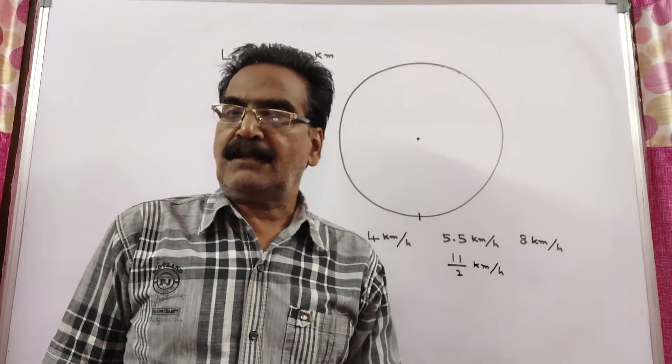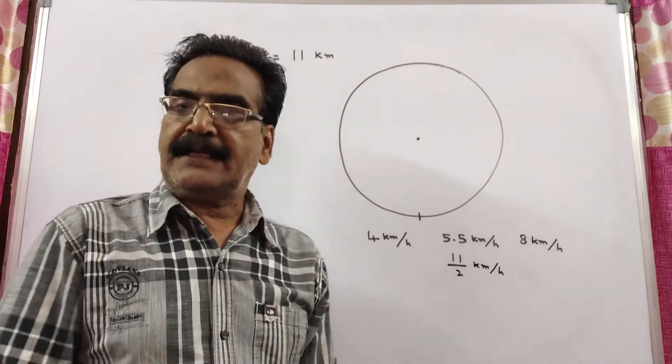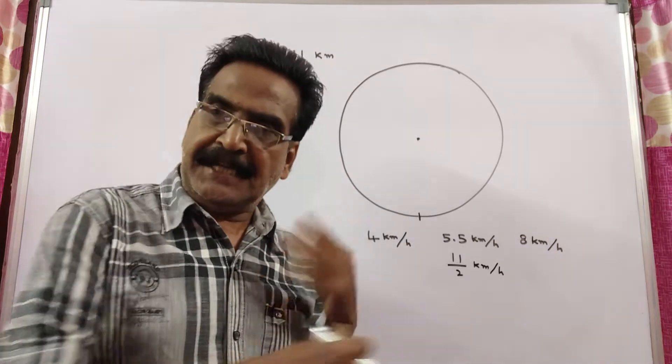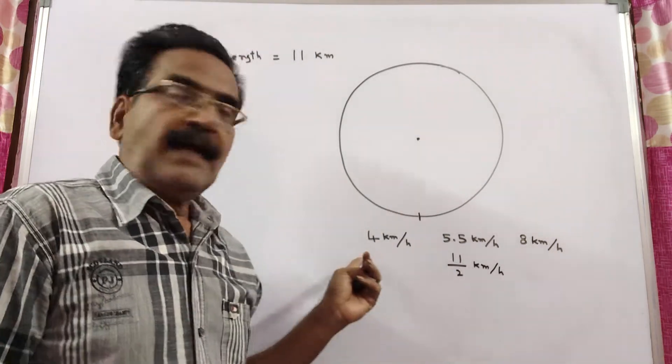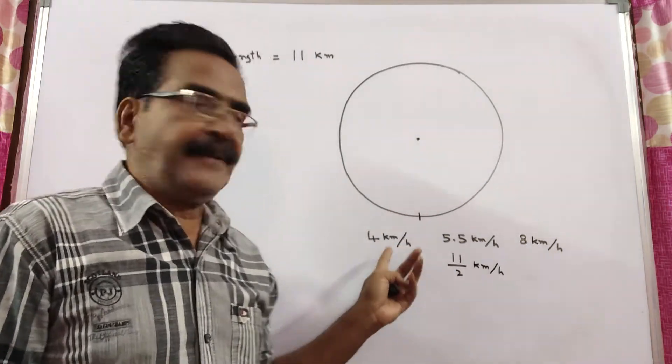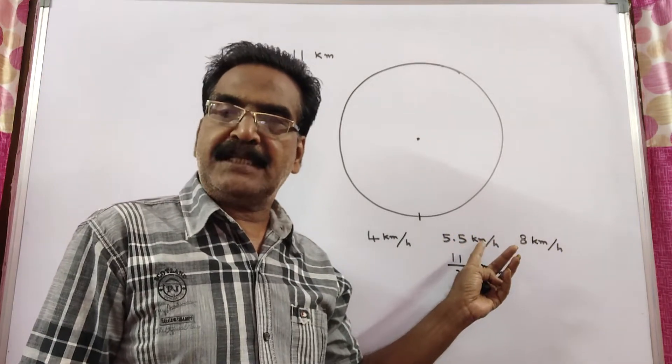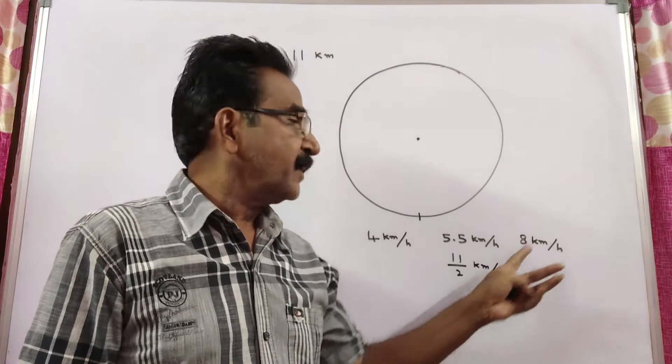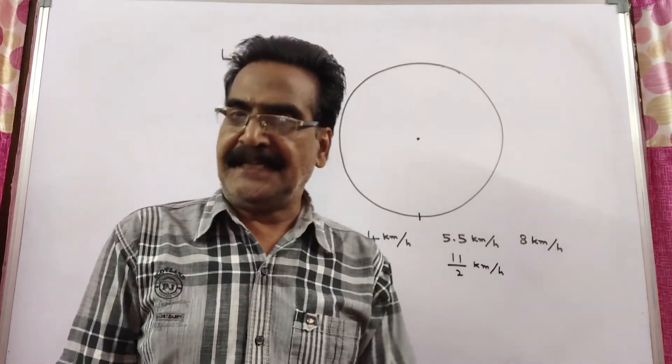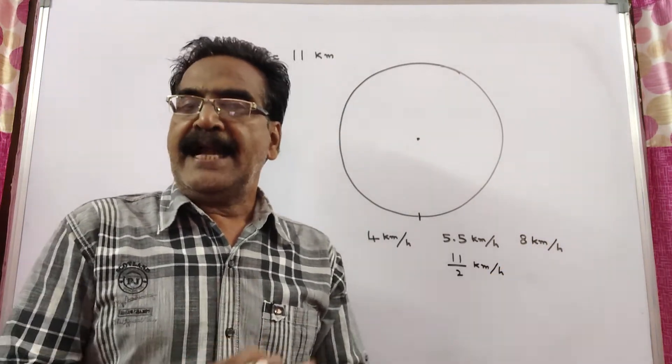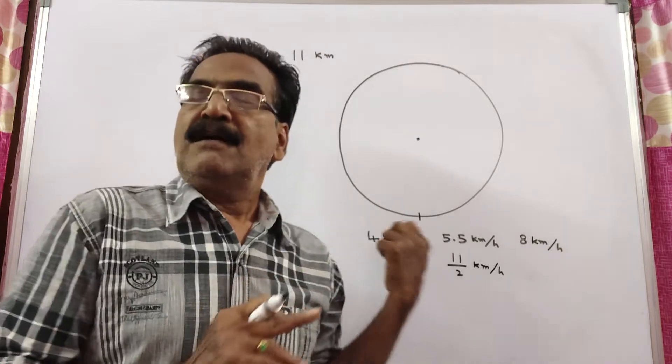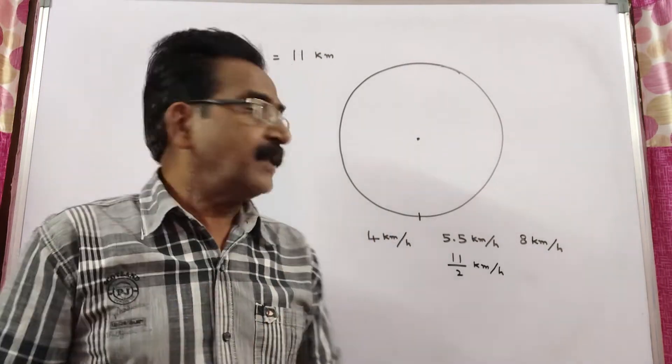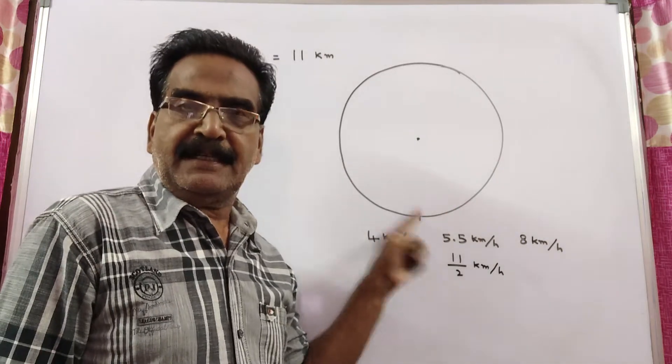Three men start running around a circular track of 11 km in the same direction with speeds of 4 kmph, 5.5 kmph (that is 11/2 kmph), and 8 kmph. The question is: when will they meet for the first time at the starting point?